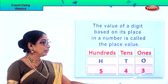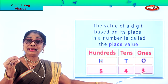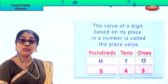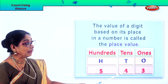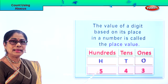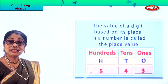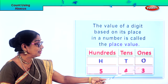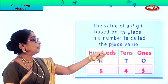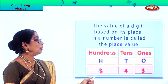Supposing you have a number three under ones, then we say the place value of number three is ones. And if you have four in the tens place, then the place value of four is tens — four tens. What is the value of the number in the hundreds place? Five — five hundreds. So this is five hundreds, four tens, three ones. That's what we mean when we say the place value is the value of a digit based on its place in a number.